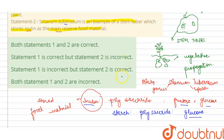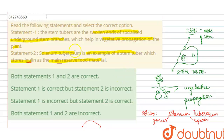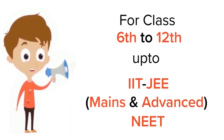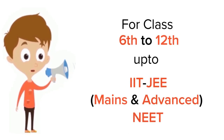Hence, our first statement is true but the second statement is false. So the correct answer is: statement one is correct but statement two is incorrect.